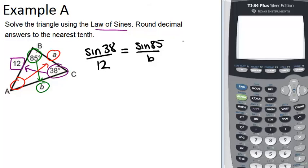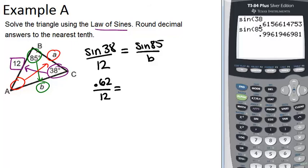Now to solve this, we use our calculator to figure out the sine of 38, which is about 0.62, and also the sine of 85, which is about 0.996.